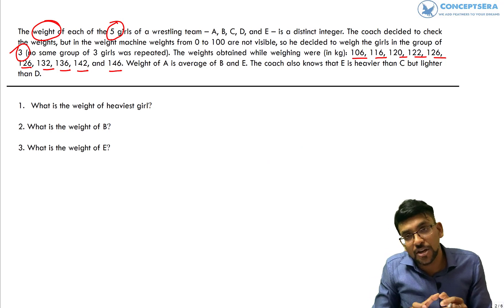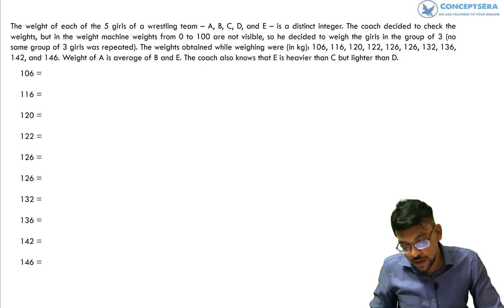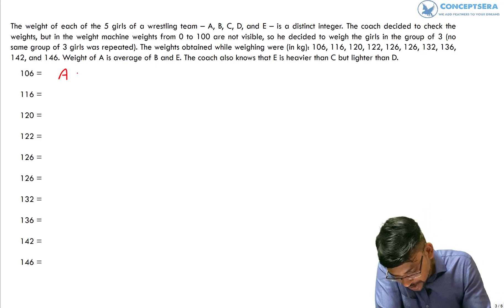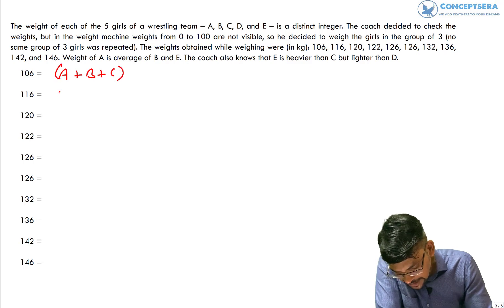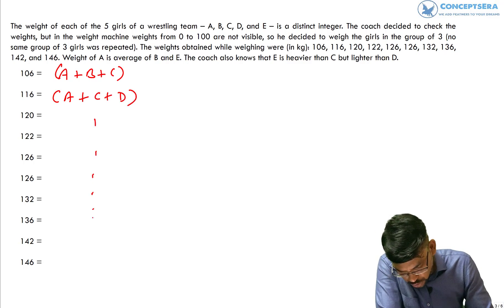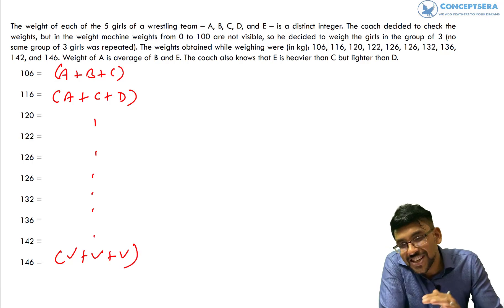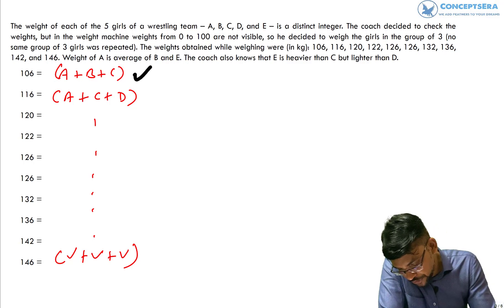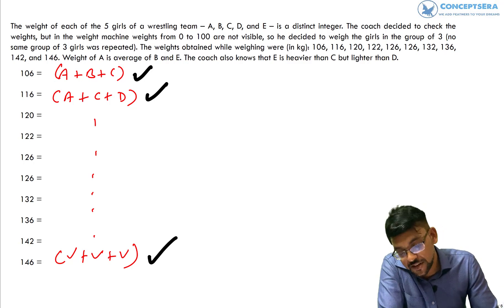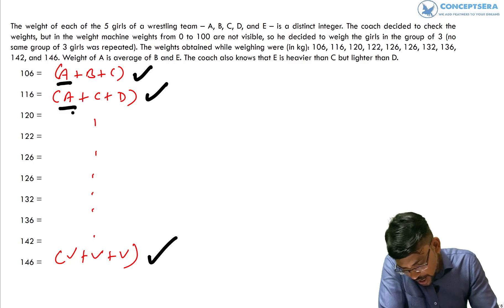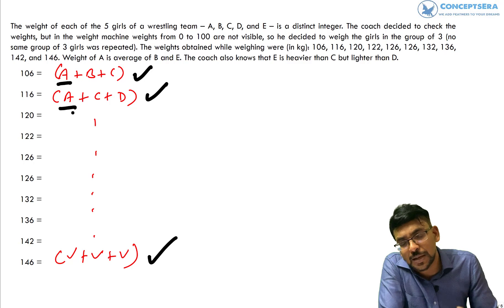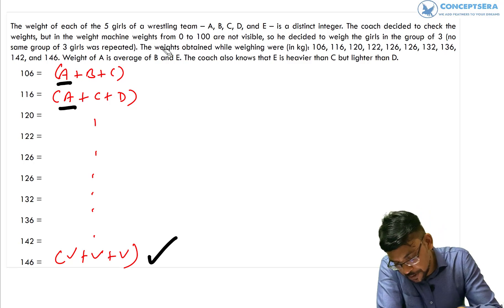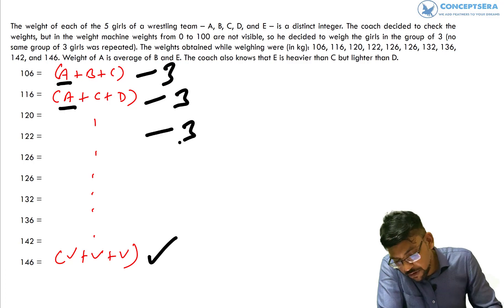Let's look at how we can decode this caselet. If 106 represents A plus B plus C, then similarly other combinations represent other groups of three. Every weight is the sum of three people and there are 10 observations. If we count how many times each letter appears across all groups: A, B, C, D, and E will each come multiple times, and the total count across all groups is 3 times 10, which equals 30.